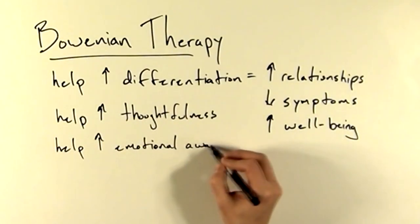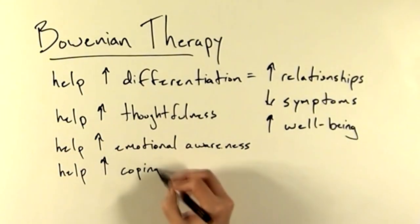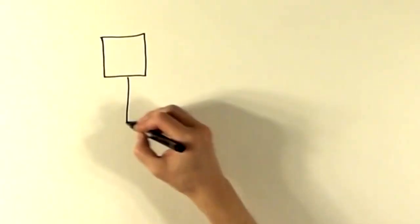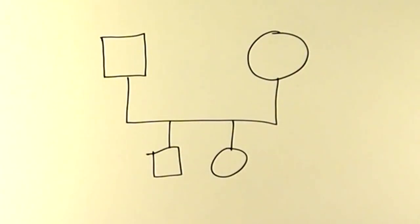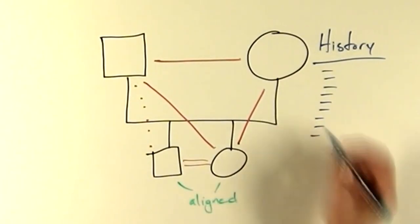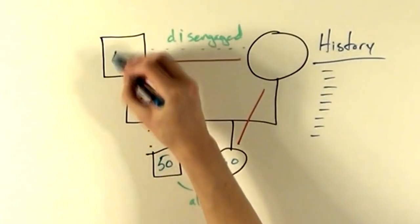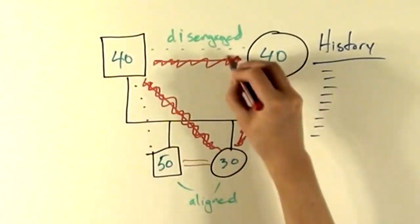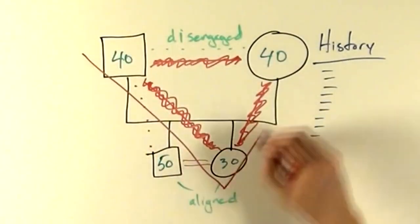They might teach emotional awareness skills and emotional management skills. They might coach the client to differentiate from their family of origin. Bowenian therapists like to make genograms with their clients. They also assess the family pattern, the family history, the family structure, each person's differentiation level, the way the family handles anxiety and stress, the way anxiety moves through the family, and the way they triangulate.